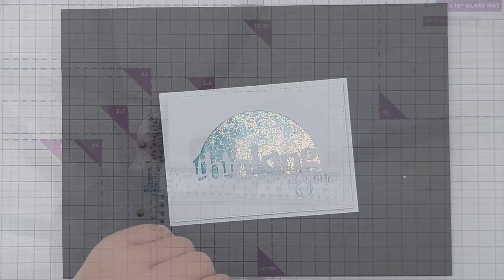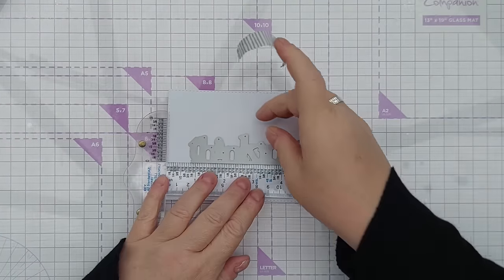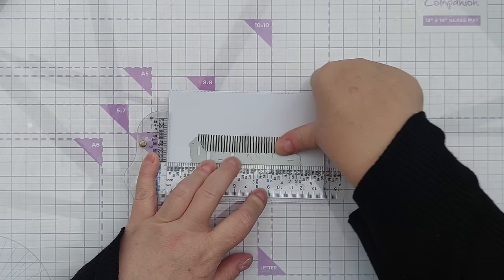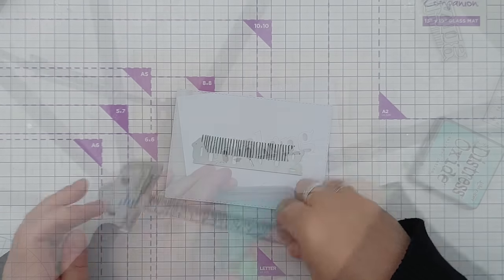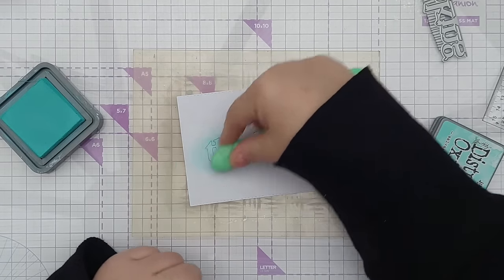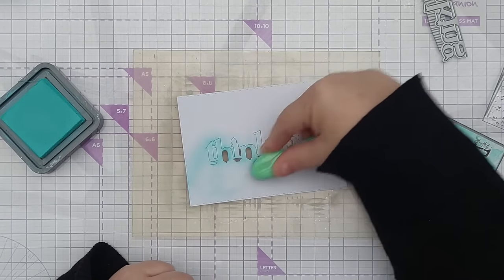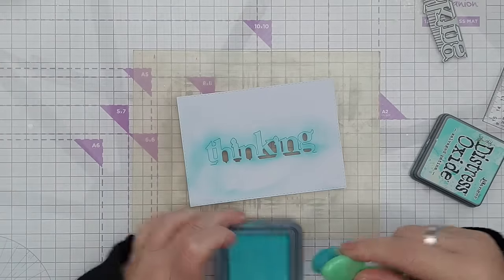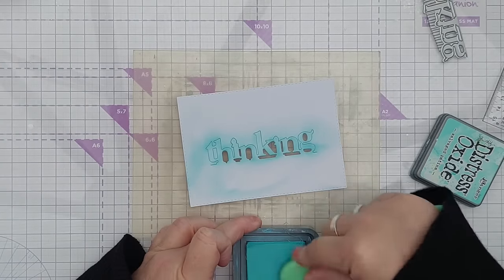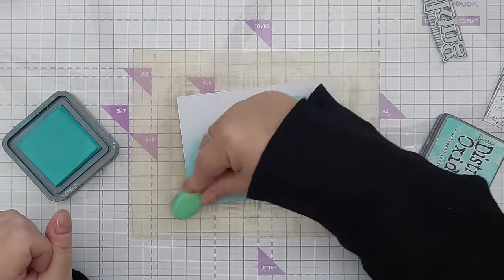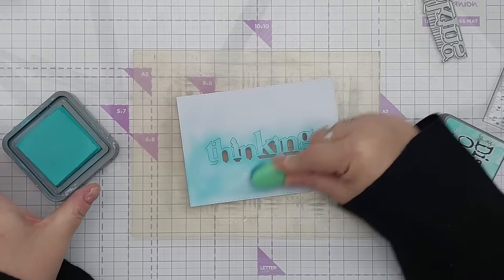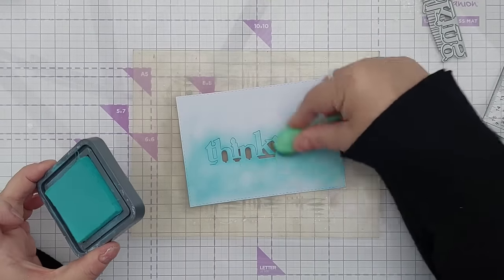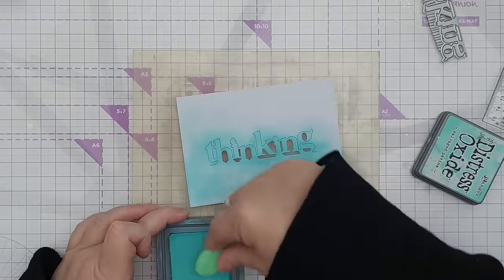For my next card I thought I would jazz things up, so this is not going to end up clean and simple at all. So what I did was I took a piece of smooth white card stock, cut the thinking from it, and then I added some colour. So I've got Salvage Patina Distress Oxide here and I'm just blending that over the panel.